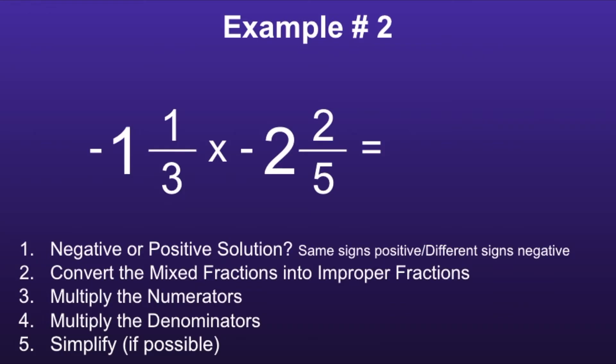Example number two. Step one: negative or positive solution. If we look at the numbers, we can see that both numbers have a negative sign. So this will fall under same signs positive, which means our solution will be positive. Since that is the case, we can actually get rid of both these negative signs.